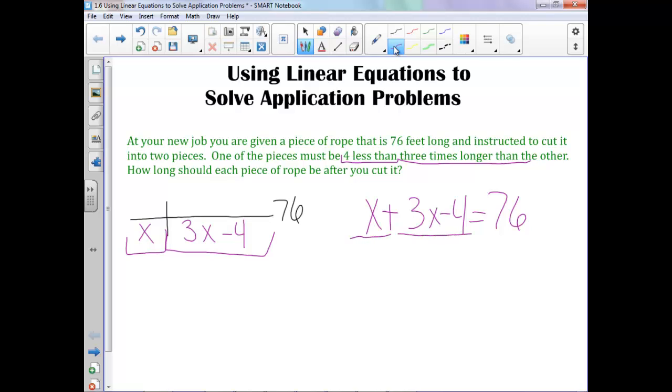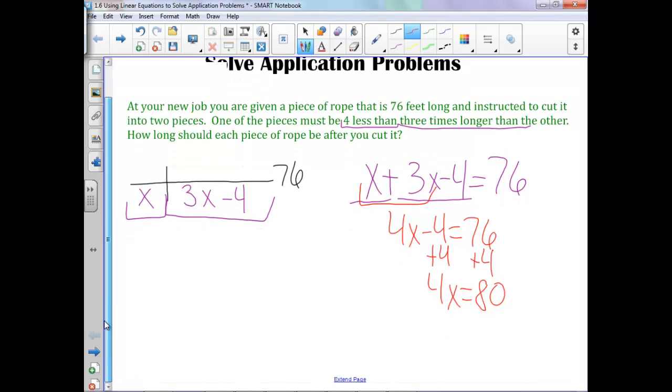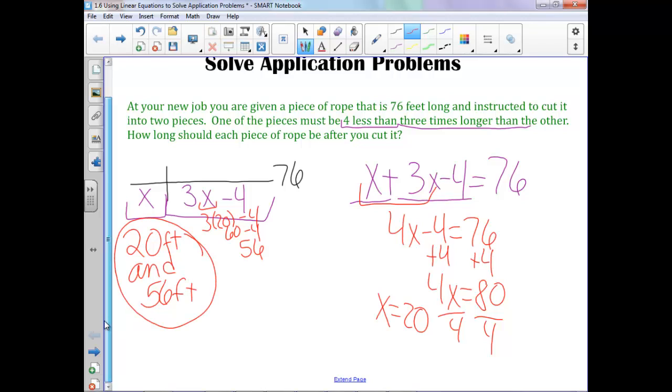Here's our first piece, here's our second piece, and now we can just solve these like we did yesterday. So X plus 3X is 4X minus four equals 76. Add your four, we'll get 4X equals 80. Divide by four, X equals 20. And now let's go through, we want to know how long should each piece of rope be. So we know this piece should be 20 feet. And when you plug 20 in for X here, we'll get 3 times 20 minus 4 equals 56. So 20 feet and 56 feet. There we go. That one's not too bad.